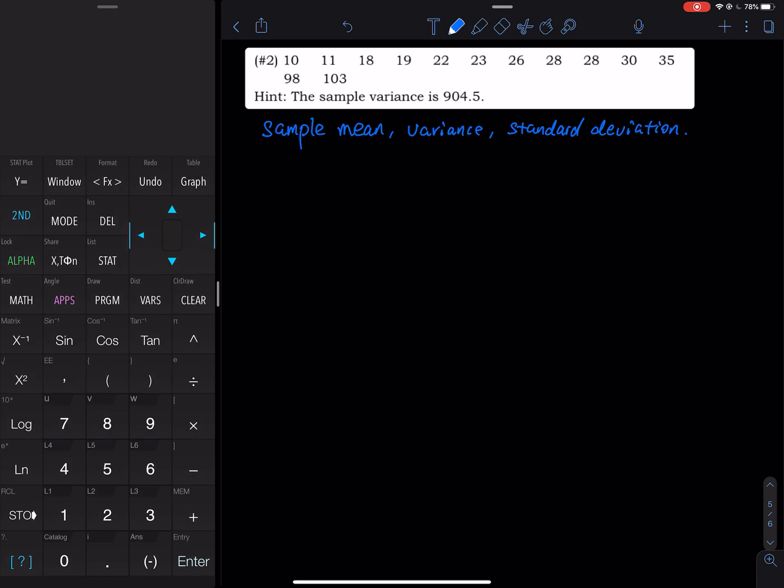So first, let's get the sample mean. x̄ is equal to 10 plus 11 plus 18 plus 19 plus 22 plus 23 plus 26. You add them up.